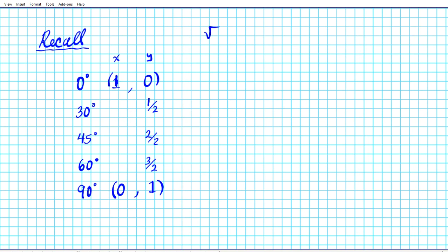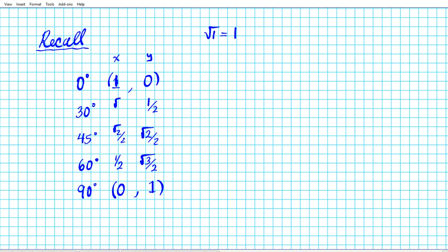Then you take the square root of the numerator. The square root of one is just one, so we don't need a square root there, but we place the square root on the two and the square root on the three. So the x-values go: 0, one-half, root two over two, root three over two, and then one. For the y-values, you just copy those three middle numbers in reverse order: one-half, root two over two, and root three over two. Those are the coordinate pairs for the reference angles on the unit circle.